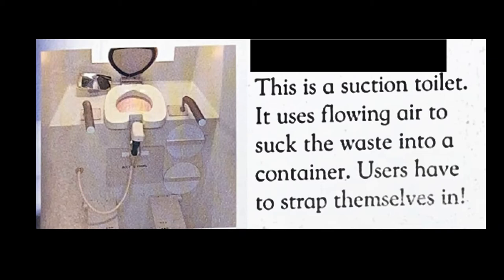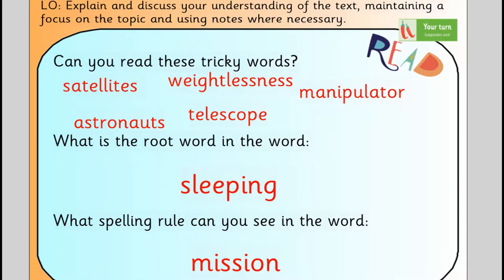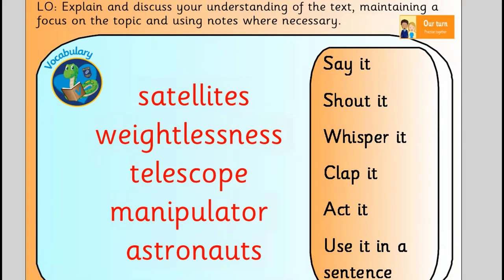Hopefully you've got the headings in the right places. Now let's have a look at some tricky words. I'm going to read them and I want you to repeat after me. What is the root word in the word 'sleeping'? That's right — it's the word 'sleep' with the suffix 'ing' added to the end. What is the spelling rule you can see in the word 'mission'? Pause the video here and have a think. Welcome back — it's the 'shun' ending, the S-I-O-N ending. Today I'm going to say the words and show you the definitions and how I've used them in a sentence. Once I've said it, I want you to repeat after me.